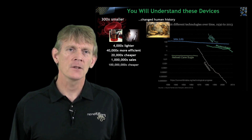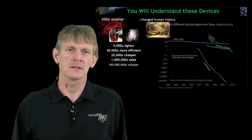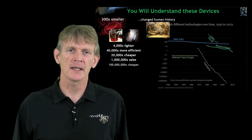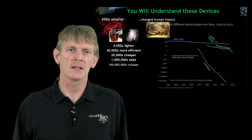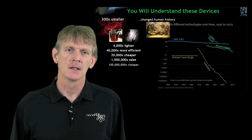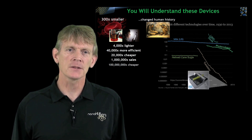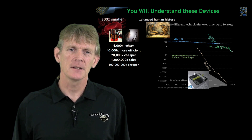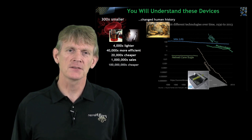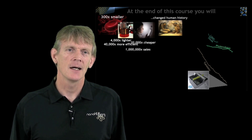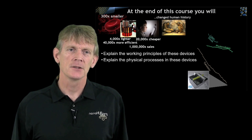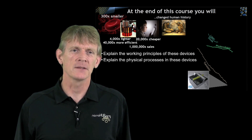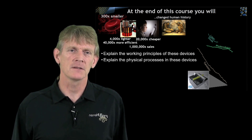Now, you will understand these devices here — transistors, photovoltaics devices, and lasers. And by the end of the course, you'll appreciate these transistors at the end of the roadmap, and you'll be able to explain these transistors and these devices.